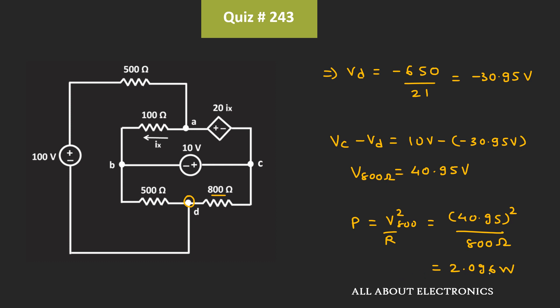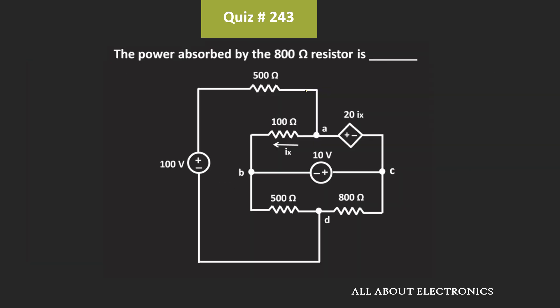So this will be the power absorbed by this 800 Ohm resistor. We can say that for the given question, the power absorbed by this 800 Ohm resistor is equal to 2.096W.